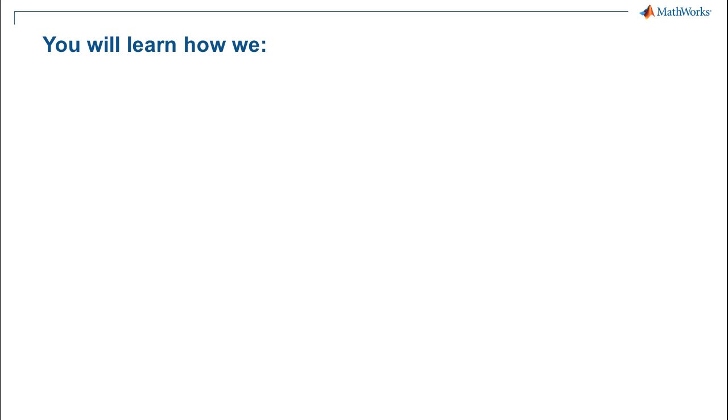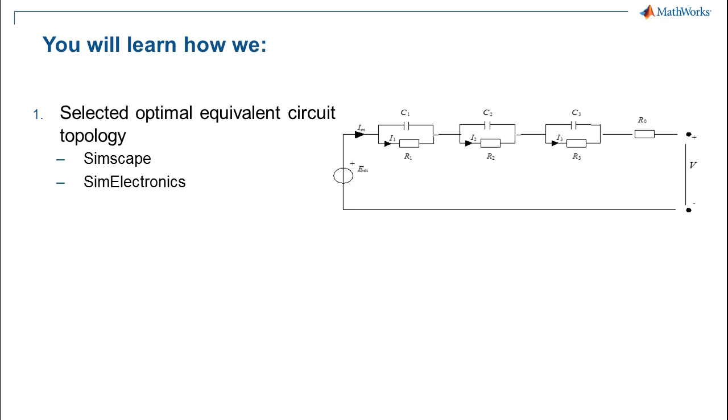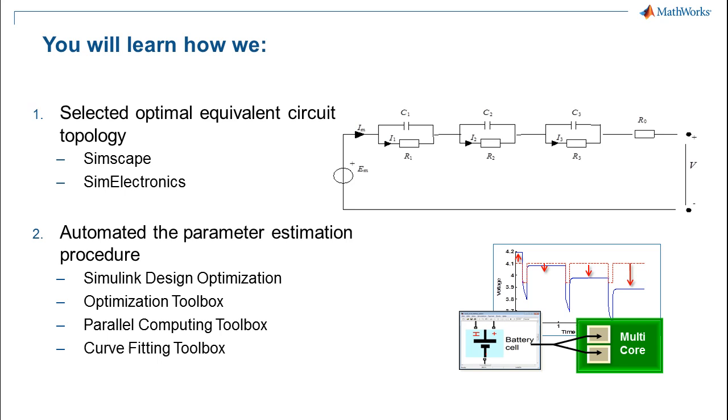In the remaining slides, I'll show you the process we used to develop a model of a lithium iron phosphate battery cell. There are two things we did to achieve this. First, we selected the optimal equivalent circuit topology for our data and built a Simscape model of the equivalent circuit. Then we developed and automated a process to analyze the data using several tools to automatically populate parameters in the model to match measured datasets.